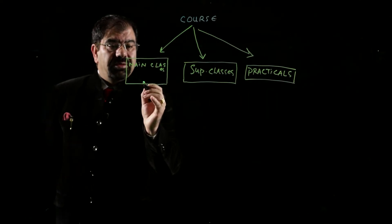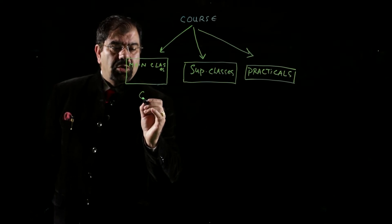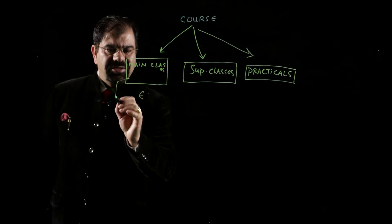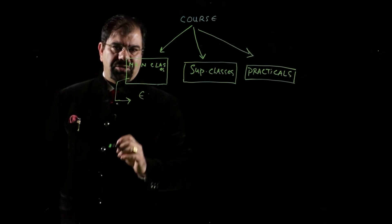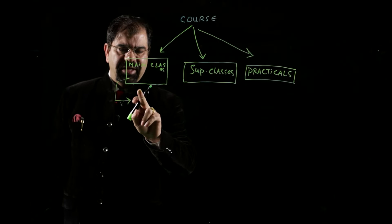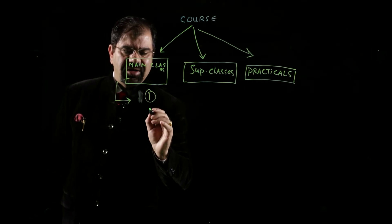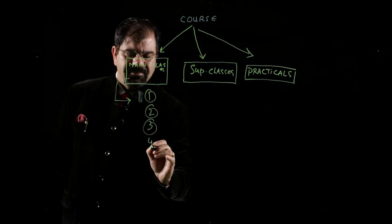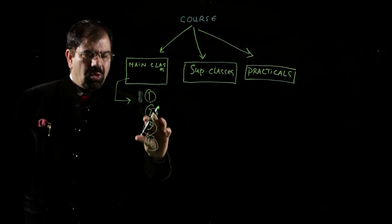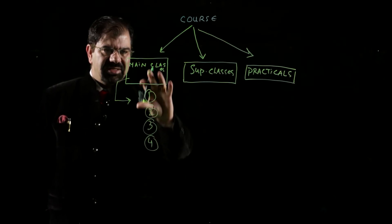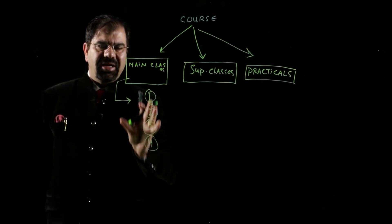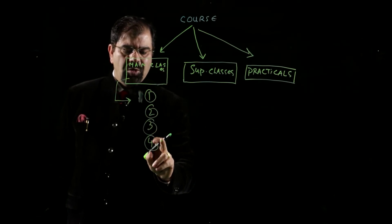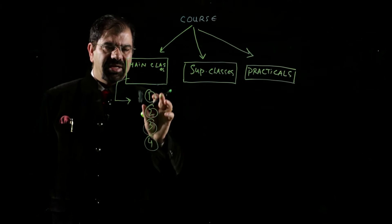Each course will be having main classes. In main classes, we will be having class videos — class number one, class number two, class number three, class number four. There will be four to seven classes in one main class. In this main class, we will be having four, five, or six main classes.